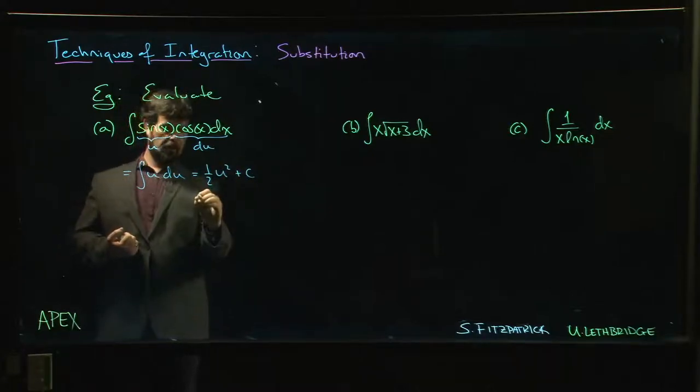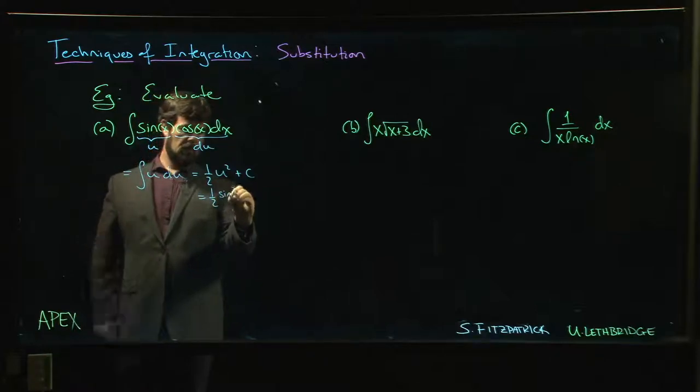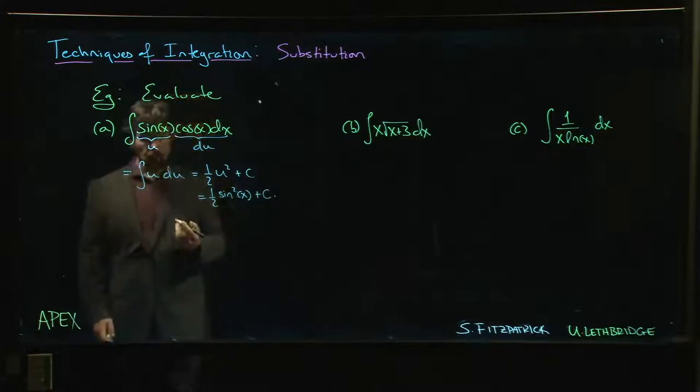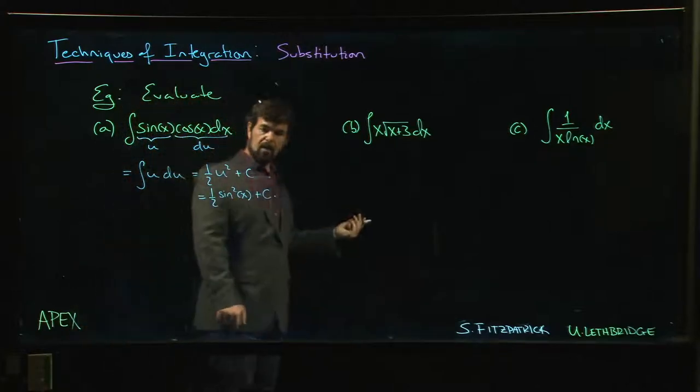Put the u back in. u equals what? Sine x. So one half sine squared x plus c, and you're done. Simple as that.